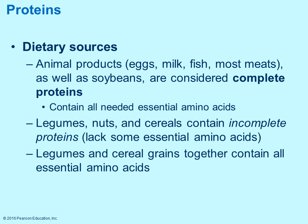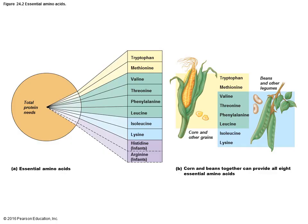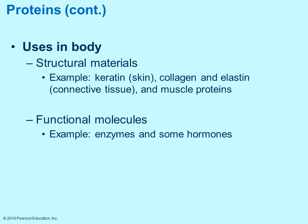Proteins come from a lot of different sources — often from animal products, but also from nuts, legumes, and different cereal grains. This table shows the total protein needs and lists the amino acids that are necessary — you must get these from your diet because you cannot make them. You cannot get all essential amino acids just from grains or just from beans; you need a combination of both in your diet.